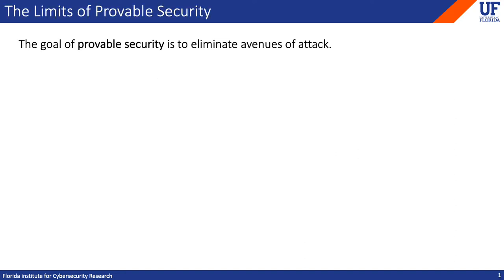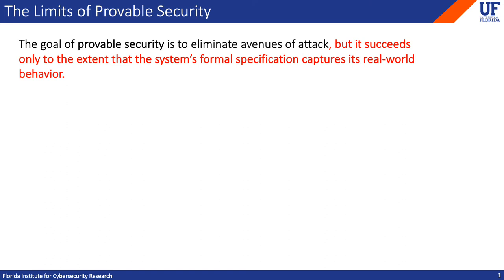These days, the standard of security for a cryptographic protocol is that breaking it should be as hard as invalidating some well-studied computational assumption, which provides a strong guarantee in theory. But in practice, the provable security methodology has some important limitations. One of them is that for a given system, it succeeds at eliminating attacks only to the extent that the system's formal specification accurately captures its real-world behavior. So the subject of this paper is the task of reconciling discrepancies between the real system and its supporting analysis.